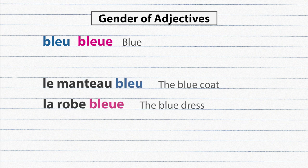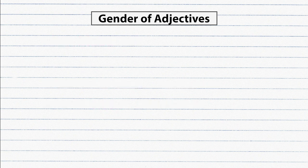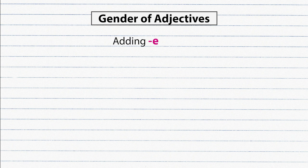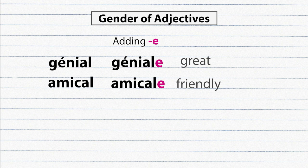Masculine adjectives can be made into feminine in several ways. Most often we can change a masculine adjective into feminine by adding an E at the end of the adjective. Example: génial, géniale. Amical, amicale. Note even when we add E both adjectives are read the same and the only difference is in the written form.